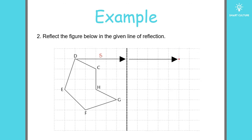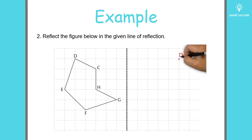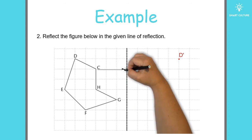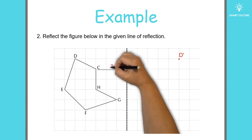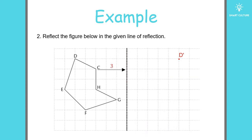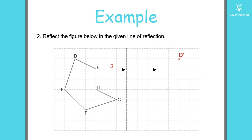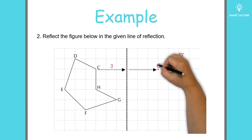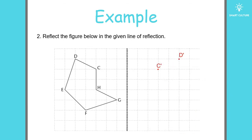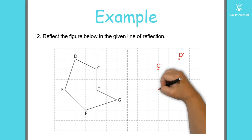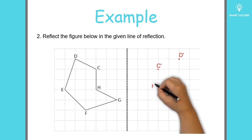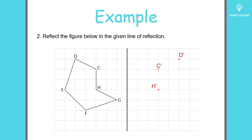This is the image of point D. Let's move on to point C — you'll see that it is three units away from the line of reflection, so this is the image of point C. Let's move on to point H — this is the image of point H. Point G is only one unit away from the line of reflection.